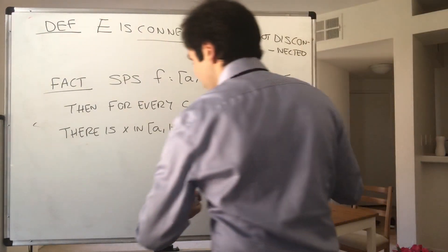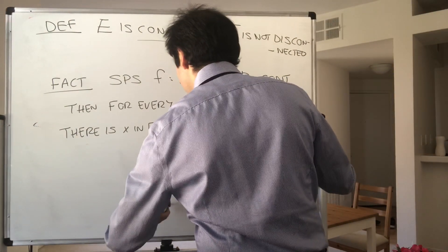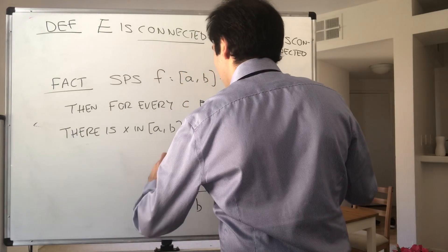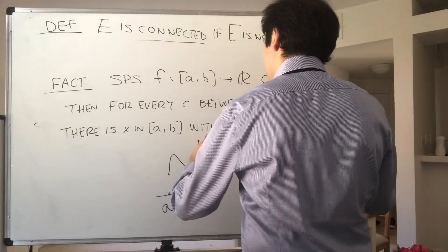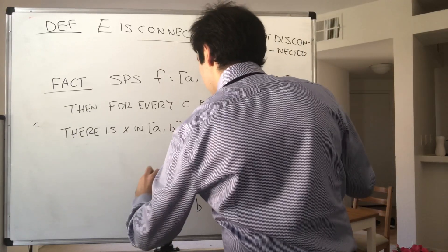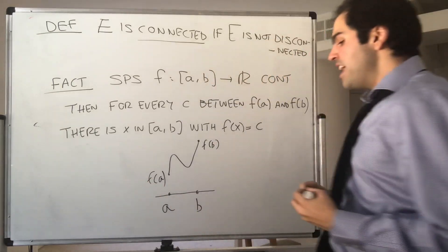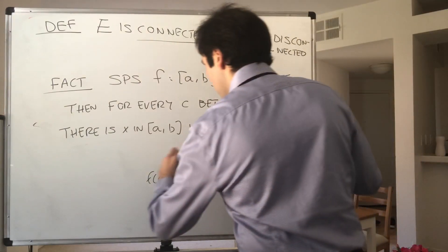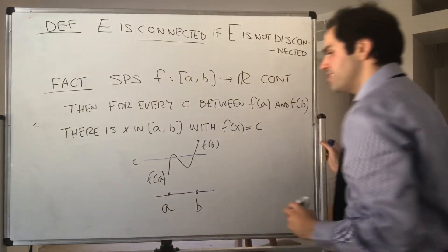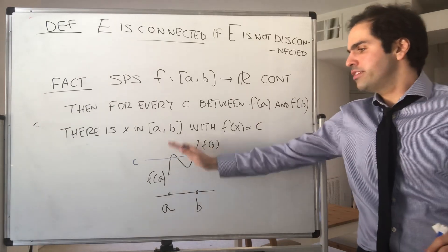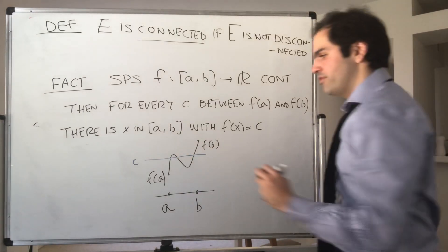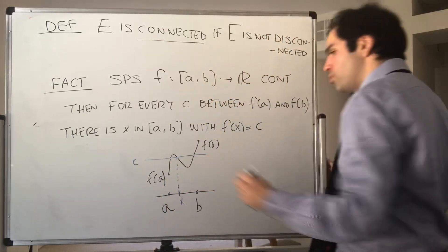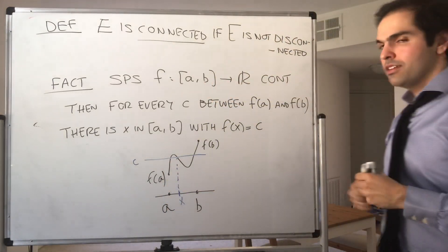Picture-wise, what is this saying? Well, suppose you have the closed interval [a,b] and a function that goes from f(a) to f(b). Then what this is saying is, for any number C between f(a) and f(b), the horizontal line y = C must intersect the graph somewhere. In other words, f attains all the values between f(a) and f(b).